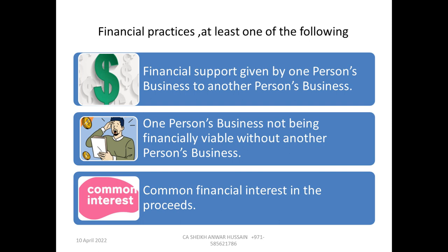For financial aspects, at least one of the following should be fulfilled. First, financial support given by one person's business to another — for example, a profitable business supporting another business that is not running profitably, or any form of financial support between companies. Second, one person's business not being financially viable without another person's business — for example, ABC Company doing bulk purchasing and supplying to XYZ Company. Third, common financial interest in the proceeds — meaning they are doing business for the same purpose and same motive.